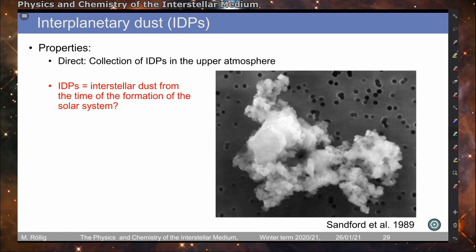It remains an open question whether the interstellar dust still has the same composition and properties from the formation time of the solar system — that is, whether this dust is leftover from the building blocks from which the solar system formed. Shown here is an example of how these dust particles look: they are micrometer-sized, very irregularly formed, and we can think of how they coagulated from differently sized structures that stuck together.